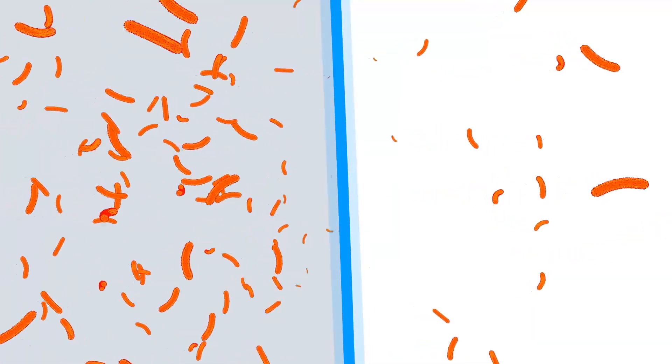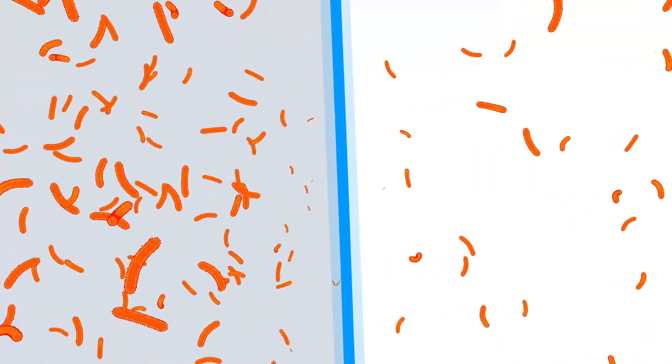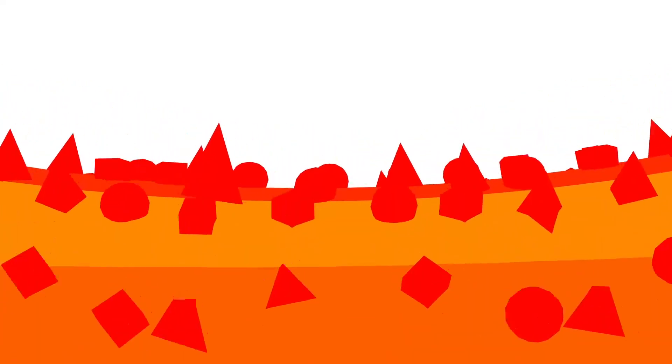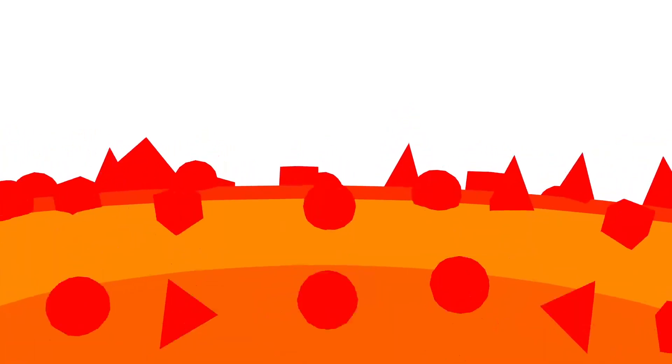There are barriers to stop this happening, but suppose some disease-causing bacteria do get through. Your immune system is quick to recognise them as invaders. This is because the proteins or sugars on the bacteria's surface have different shapes to any of the ones in the human body.